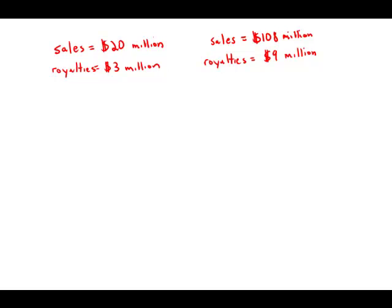A pharmaceutical company received $3 million in royalties on the first $20 million in sales of the generic equivalent of one of its products, and then $9 million in royalties on the next $108 million in sales.